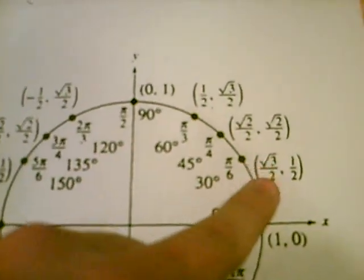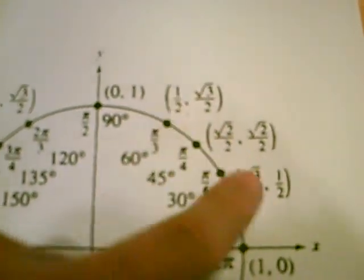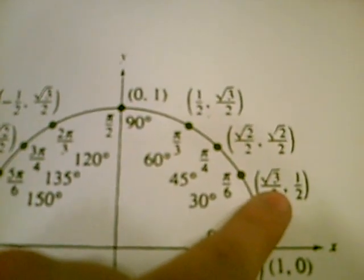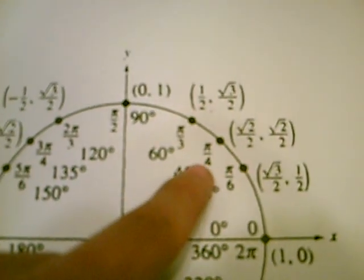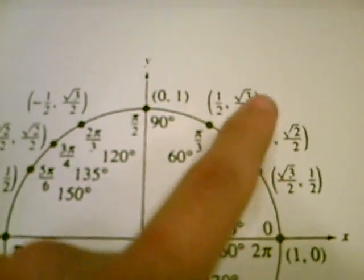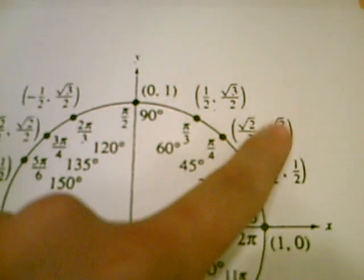So everything over here, the x's and the y's, they're all going to be positive. So if you have something like cosine of pi over 4, you know it's always going to be positive. Sine of pi over 4 is going to be positive.